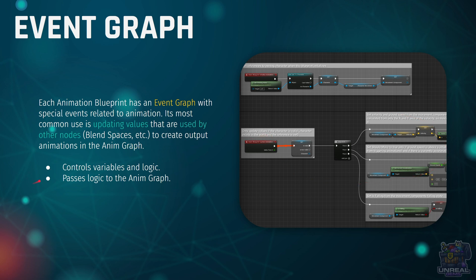Remember that the Event Graph is going to control variables and logic that we store in those variables. For example, if you need to calculate the velocity of the character from a vector, you are going to do this in the Event Graph, not in the Anim Graph. Then we are going to pass those computations stored in those variables to the Anim Graph, which is then going to make a final decision on the Skeletal Mesh's output pose.